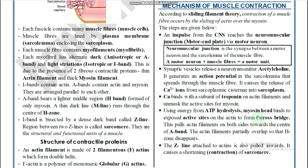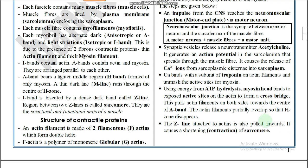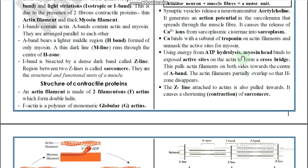Earlier we discussed that troponin masks the myosin binding site on actin; whenever calcium attaches to troponin, unmasking takes place. Using energy from ATP hydrolysis, the myosin head binds to the exposed active sites on actin to form cross-bridges. ATP is hydrolyzed to ADP, and the myosin head attaches to actin while the myosin binding sites are exposed.